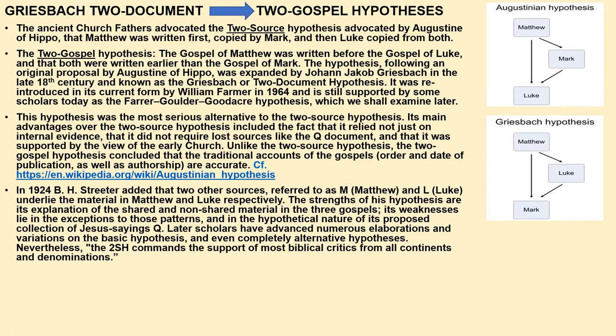In 1924, a brilliant and still highly respected scholar, B.H. Streeter, added that two other sources — referred to as M for Matthew and L for Luke — underlie the unique material in Matthew and Luke respectively. The strengths of this hypothesis are its explanation of the shared and non-shared material in the three gospels; its weaknesses lie in the exceptions to those patterns and in the hypothetical nature of its proposed collection of Jesus sayings, Q. Nevertheless, the two-source hypothesis commands the support of most biblical critics from all continents and denominations.